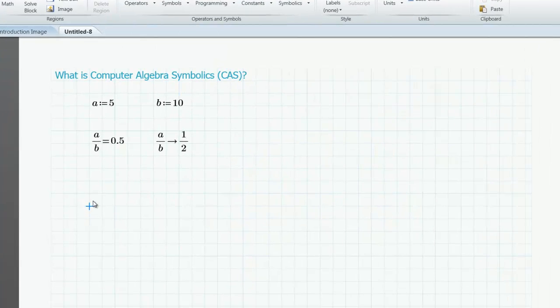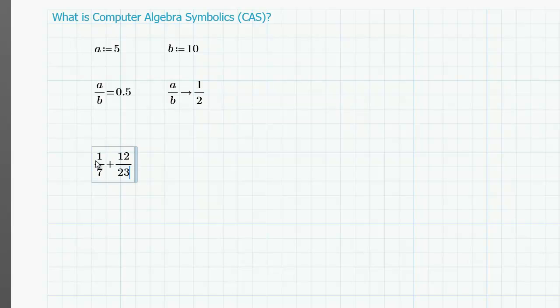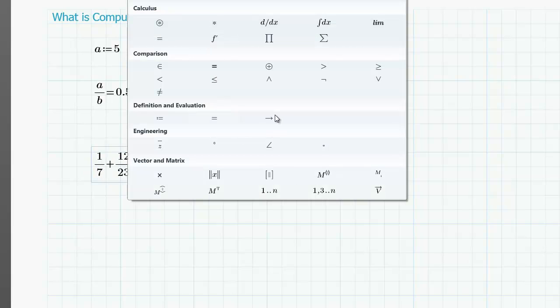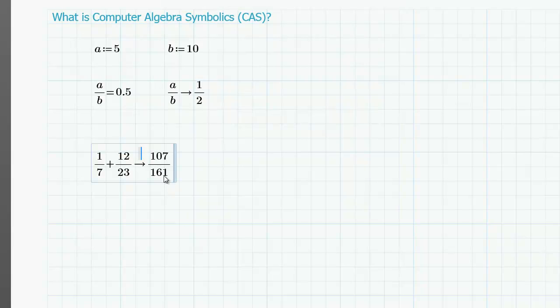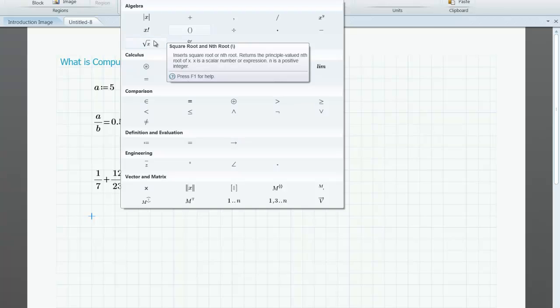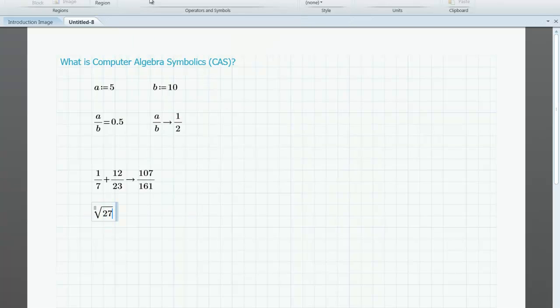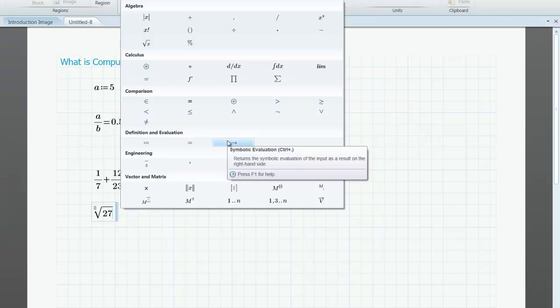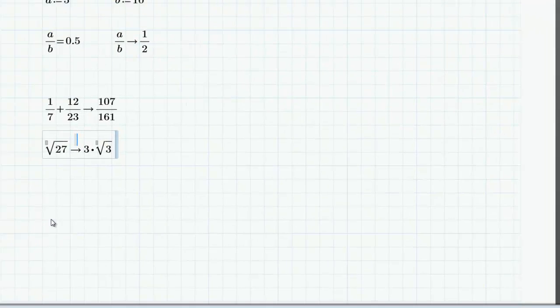Here are some simple examples of CAS using MathCAD's symbolic evaluation capabilities. If I want to evaluate 1/7 plus 12/23, if I use MathCAD's symbolic evaluation capability, the result is returned as a fraction. If I insert a square root operator and I take the square root of 27 and I evaluate that symbolically, I'll get the result 3 times the square root of 3.